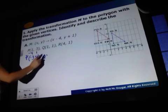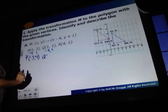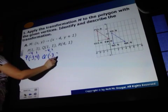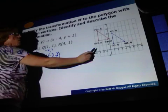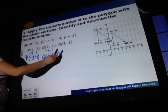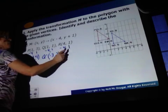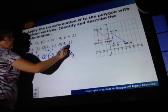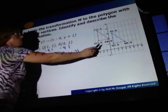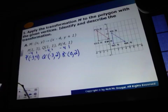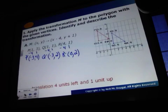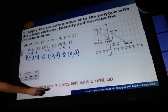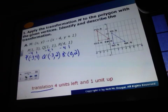Q prime — same rule: 1 minus 4 is negative 3, and 1 plus 1 is 2. And then our last vertex: 4 minus 4 is 0, and 1 plus 1 is 2. Therefore, this is a translation. It is a slide that is 4 units left and 1 unit up.